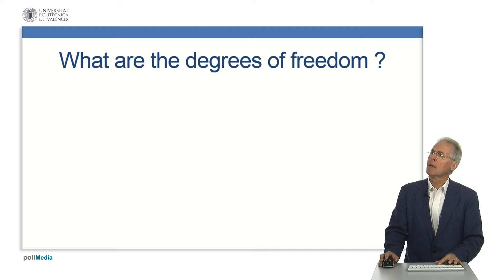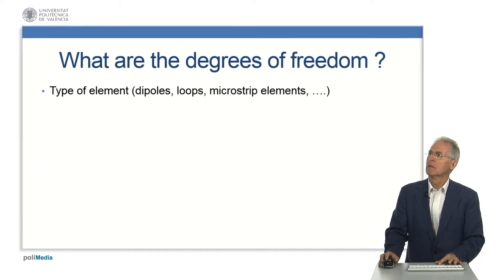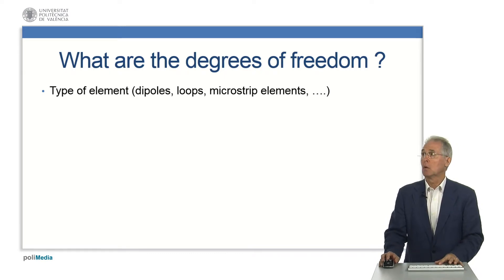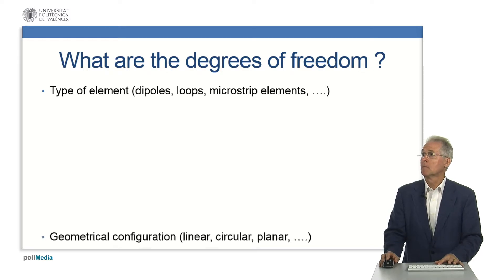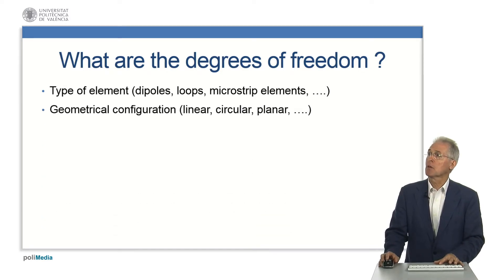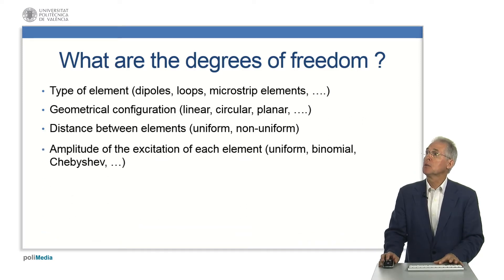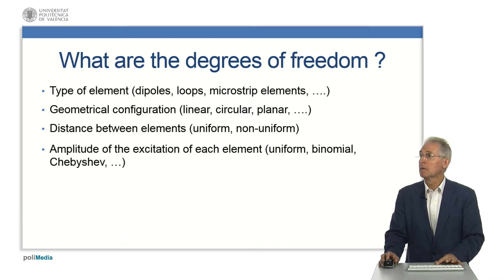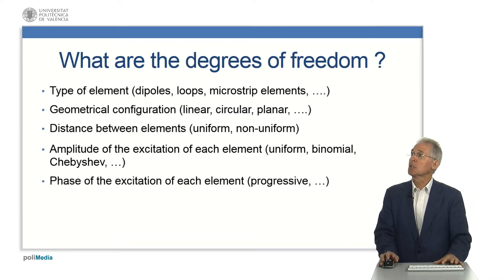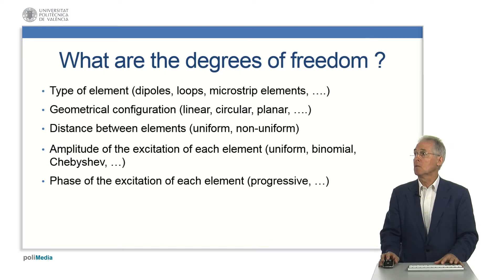What degrees of freedom do we have in an array design? Well, several: type of element — dipoles, loops, microstrip elements; geometrical configuration — linear, circular, planar; distance between elements — uniform or non-uniform; amplitude of the excitation of each element — uniform, binomial, Chebyshev; and phase of the excitation of each element — progressive or non-progressive.